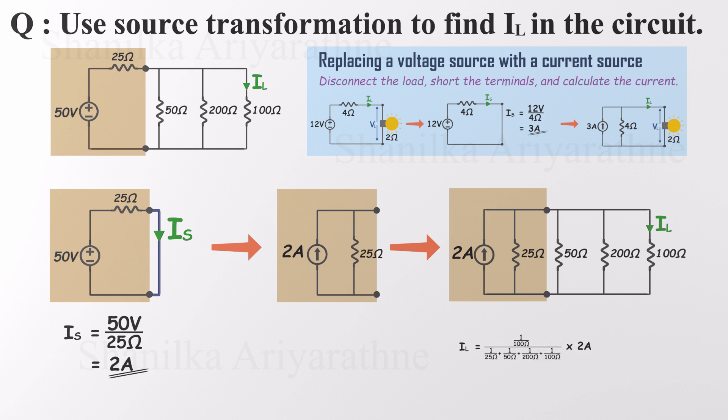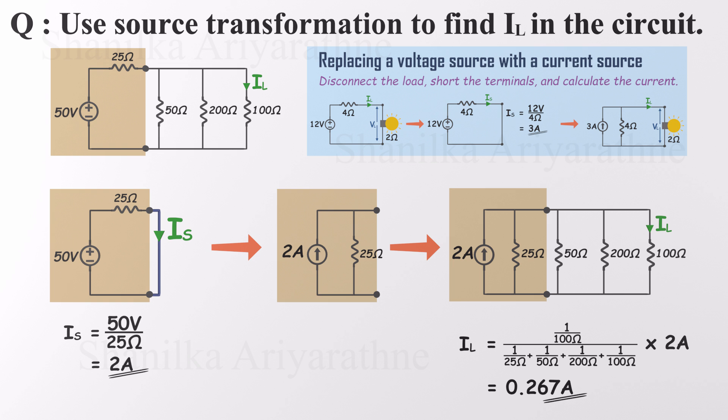Now we just apply the current divider rule and directly calculate the current through the 100 ohm resistor. If you do the math right, you'll find that IL is 0.267 amps — quick, clean, and effective. That's the beauty of source transformation.